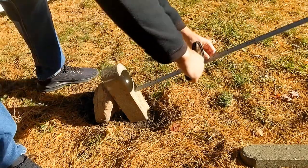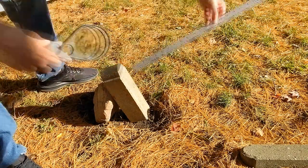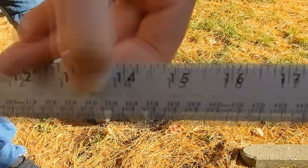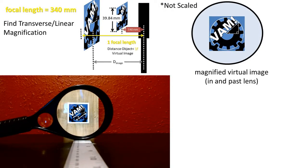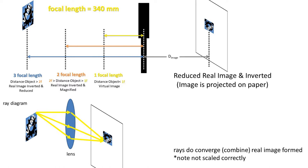In a previous video, we found that the focal length was 340 millimeters for this magnifying glass. So, how do we go about solving this one? First, let's review how the image changed depending on the location of the object, which we will be referring to as the object distance.